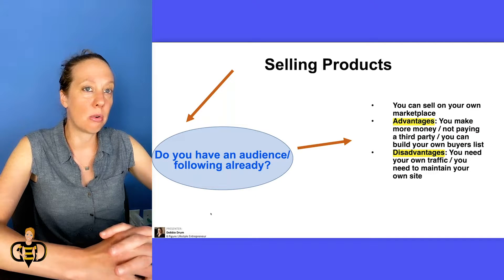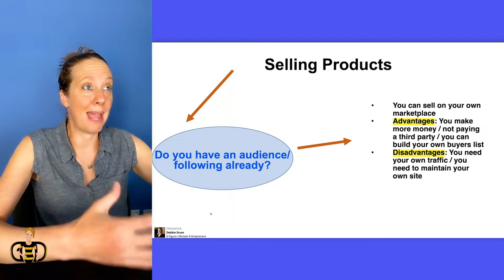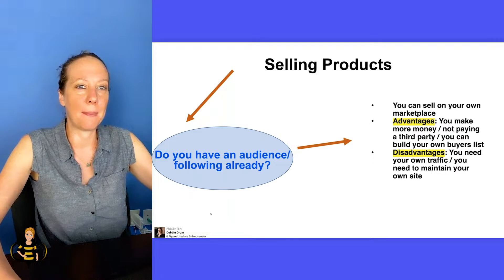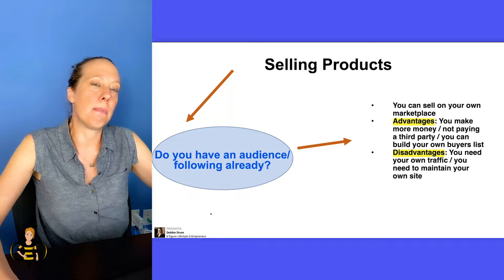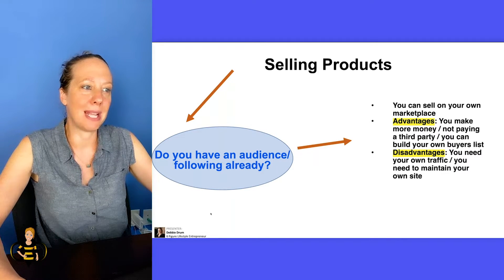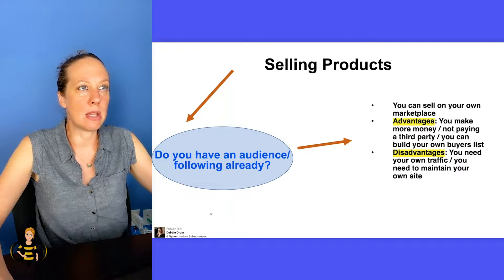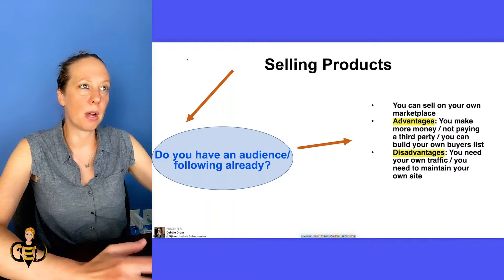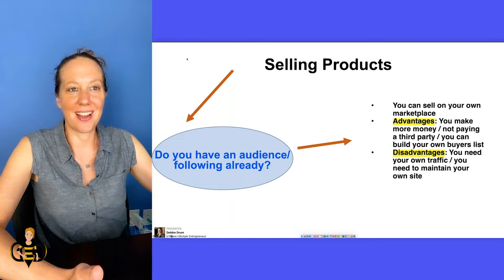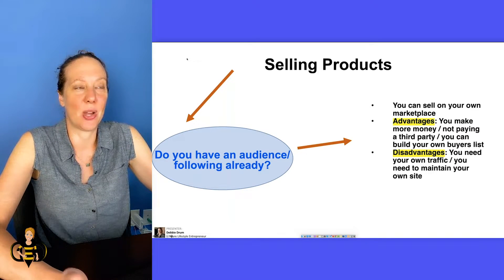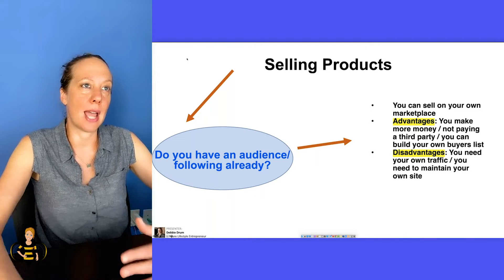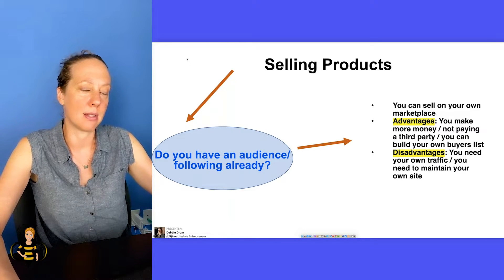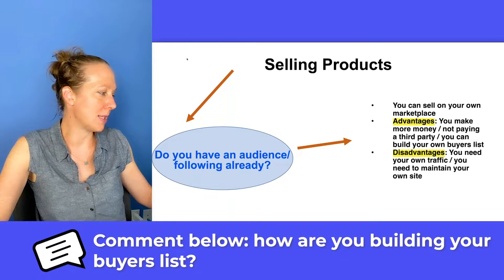The advantages of selling on your own marketplace is you make more money — you're not paying a third party royalties or a portion of your royalties because there is no third party. You can also build your own buyers list. When you're selling on other marketplaces, you have to go through another means to get people on your list. For instance, if you sell a book on Amazon, Amazon usually doesn't give you the buyer's email address, so you have to think of other ways, like offering a free gift inside your book.